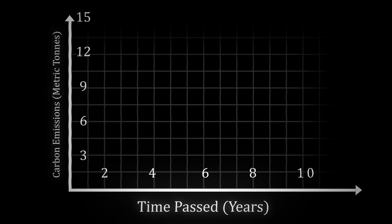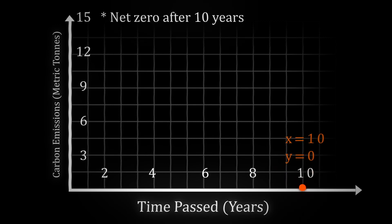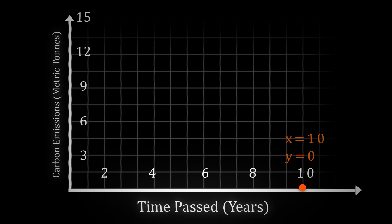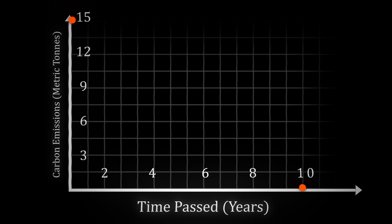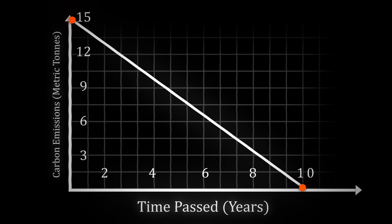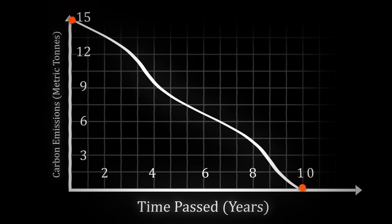Let's think of it as a graph, with the amount of years passed on the x-axis and the carbon emissions on the y-axis. The only conditions we are given is that we must have a y-value of 0 when x has a value of 10. For the sake of demonstration, let's use Australia's 15 metric tons of emissions for the starting y-value.